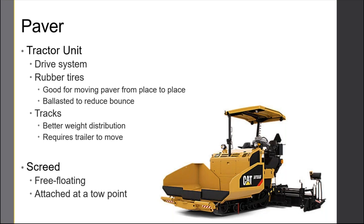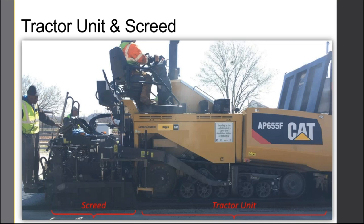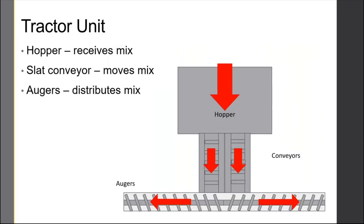The screed is attached to the tractor unit and it is free-floating. It's attached at a toe point — a pivot point that allows the screed to float along on the mix pushed out from the back of the paver. The tractor unit on the front has a hopper that receives the mix. There are slat conveyors that move the mix from the front of the paver to the back. There's an auger system that splits that mix and moves it side to side to go all the way across the width of the screed. If we're paving a 12-foot lane, the screed is set to 12-foot width and those augers turn and push the mix to evenly distribute it.